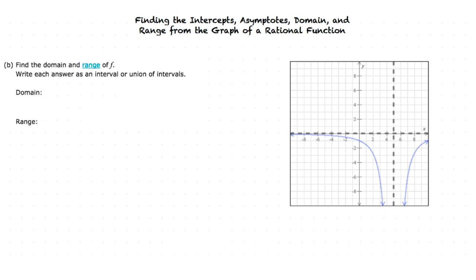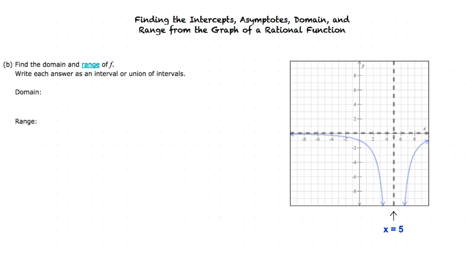Let's move on to part B, where we are asked to find the domain and range of the function. Recalling that the domain is the set of all numbers that appear as x-coordinates on the graph, for rational functions with no holes, the domain is the set of all real numbers except for the values at the vertical asymptotes. Since our vertical asymptote is x equals 5, the domain is the set of all real numbers except 5, which is the two intervals negative infinity to 5, union 5 to infinity.